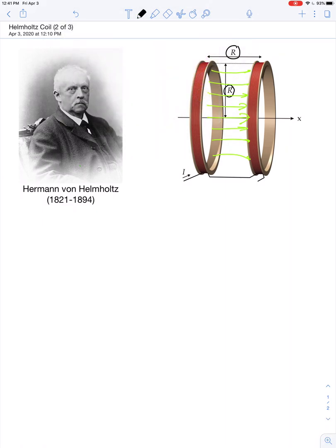So let's review what we already know about loops of wire. If you have a single loop of wire, in other words n equals 1, then the magnetic field at the center is mu-knot-i over 2r, where r is the radius of the loop.